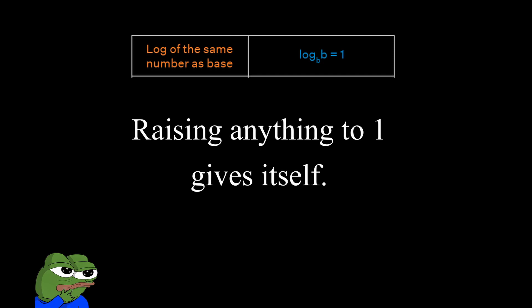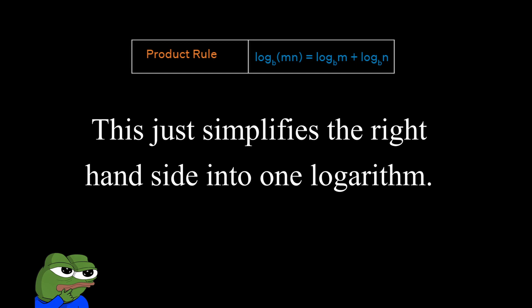The next rule is the log of the same number as the base. So log base b of b is simply 1, because you just need to raise the base to 1 to get the base. Next, we have our product rule. So if we have log base b of m plus log base b of n, you can simplify that to become one logarithm: log base b of m times n.